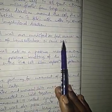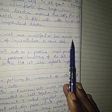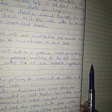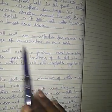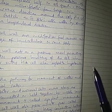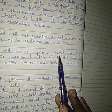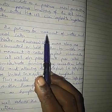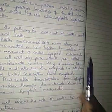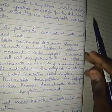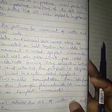Some cell walls are modified as food reserves, as in the storage of hemicellulose in some seeds, which is used during seed germination. The cell wall acts as a pressure vessel, preventing osmotic pressure from bursting the cell. It also provides a pathway for movement of water and mineral salts, reduces the risk of water loss and infection.